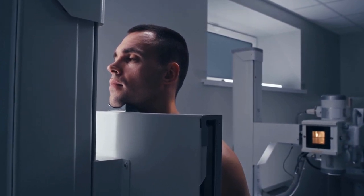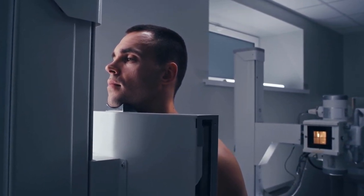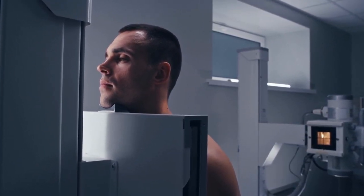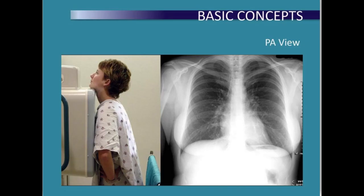There are two main chest x-ray positions commonly used. In the postero-anterior (PA) view, the patient stands facing the x-ray machine, and the x-ray beam is directed from behind — posterior — through the chest to the front — anterior.